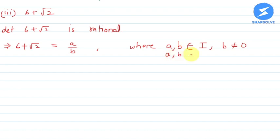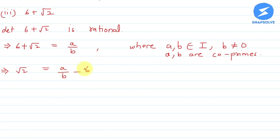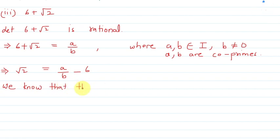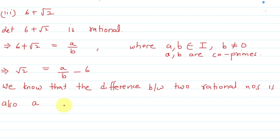And a and b are co-primes. This implies that root 2 is equal to a upon b minus 6. Now a upon b is a rational number and 6 upon 1 is also a rational number. We know that the difference between two rational numbers is also a rational number.